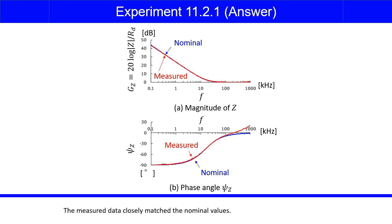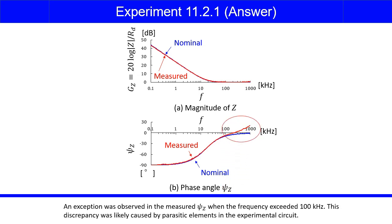The measured data closely matched the nominal values. An exception was observed in the measured psi Z when the frequency exceeded 100 kHz. This discrepancy was likely caused by parasitic elements in the experimental circuit.